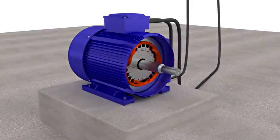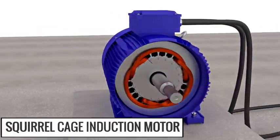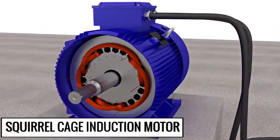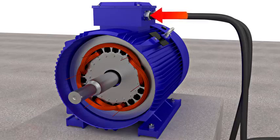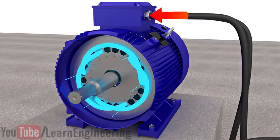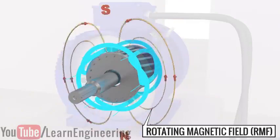First, let's have a look at the way a squirrel cage induction motor works. When a three-phase AC supply is connected to the stator winding, it produces a rotating magnetic field in the air gap between the stator and rotor.